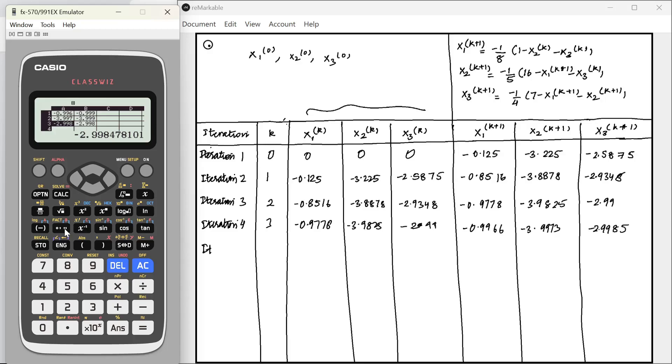Let's do one more iteration. See, it is very easy to do any number of iterations now. Again, alpha B1, alpha B2, alpha B3. I am just going to copy this again, minus 0.9966, minus 3.9973, minus 2.9985, minus 0.999, minus 3.9995, minus 2.99985.